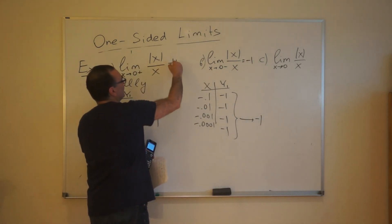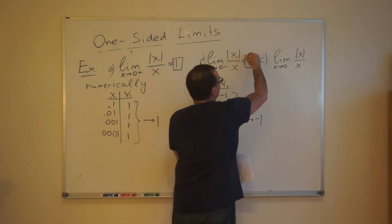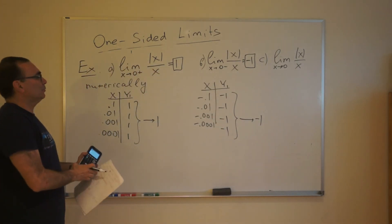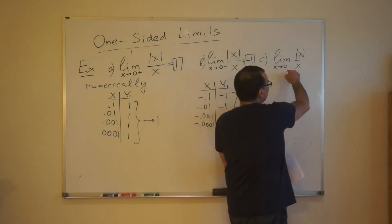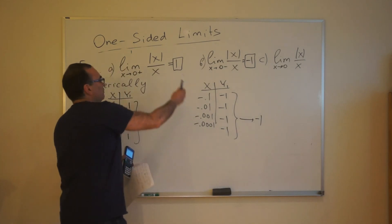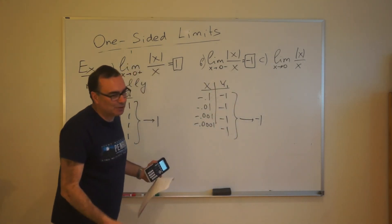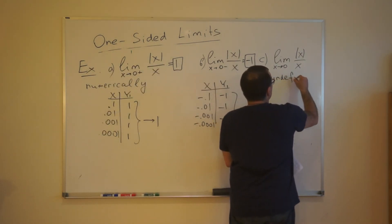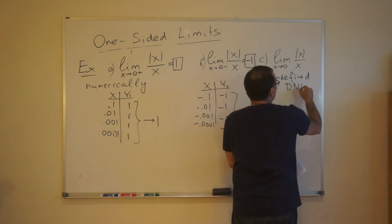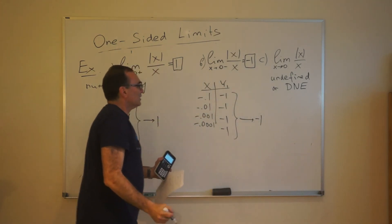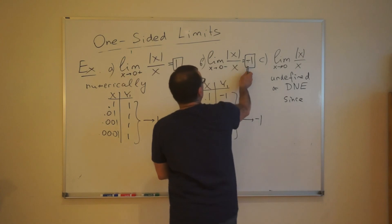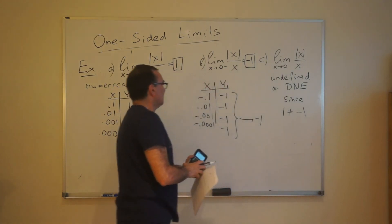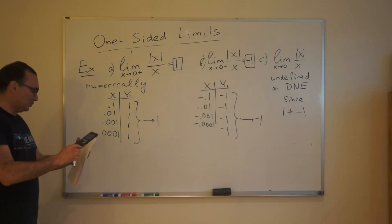As you can see, the two answers do not match. The left-hand limit is −1 and the right-hand limit is 1 — they are not the same. Since they do not match, the two-sided regular limit does not have a value. You might think we could average them and say the limit equals 0, but no — we don't do that. We simply say this limit is undefined, or does not exist. This is an example of two one-sided limits which do not match each other.